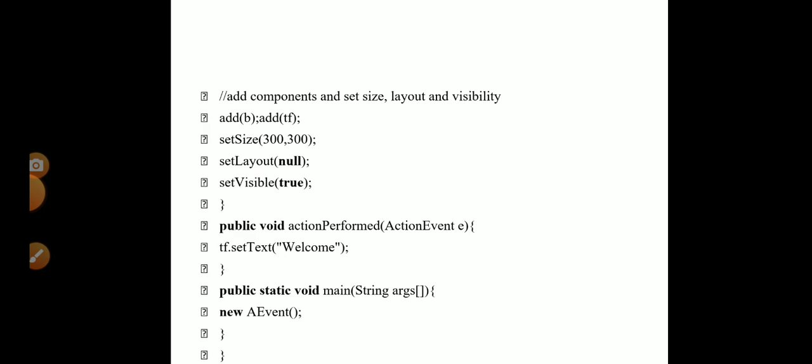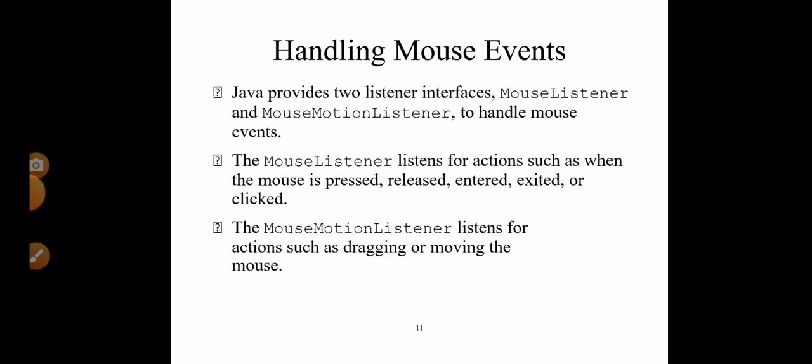We then add the components — the button as well as the text box. When the button is clicked, the void actionPerformed event is triggered. Inside that method we set the text to "welcome", so within the text field the text is set to welcome. The output of this program is: when you click the button, the text field value becomes welcome.